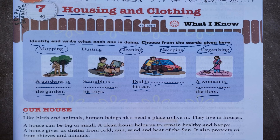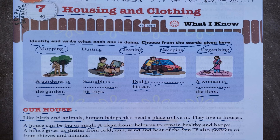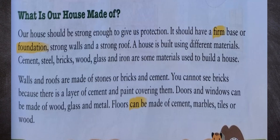Our house: like birds and animals, human beings also need a place to live in — they live in houses. A house can be big or small. A clean house helps us to remain healthy and happy. A house gives us shelter from cold, rain, wind, and heat of the sun. It also protects us from thieves and animals.